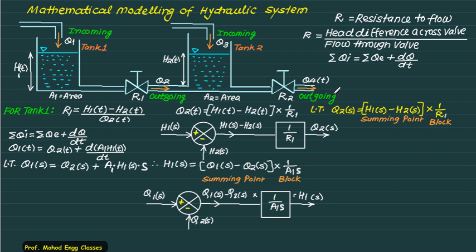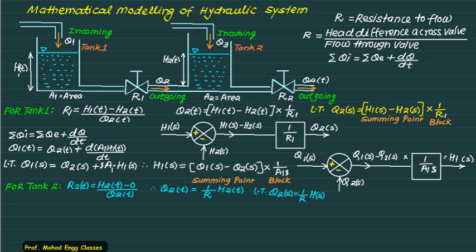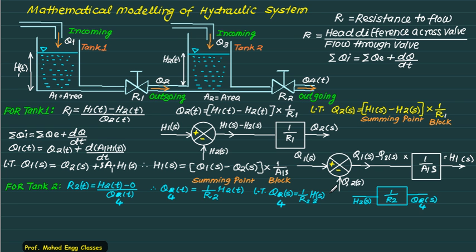I have now developed two block diagram equations for tank 1. Similarly, I will apply these two equations for tank 2 and get another two blocks. Applying the resistance equation for tank 2: the head difference across the valve is H2T minus 0, so R2T equals H2T/Q4T. Therefore Q4T equals (1/R2)·H2T. Taking the Laplace transform gives Q4S equals (1/R2)·H2S.